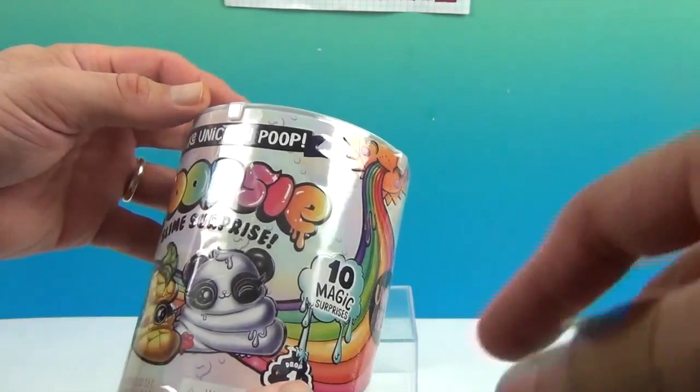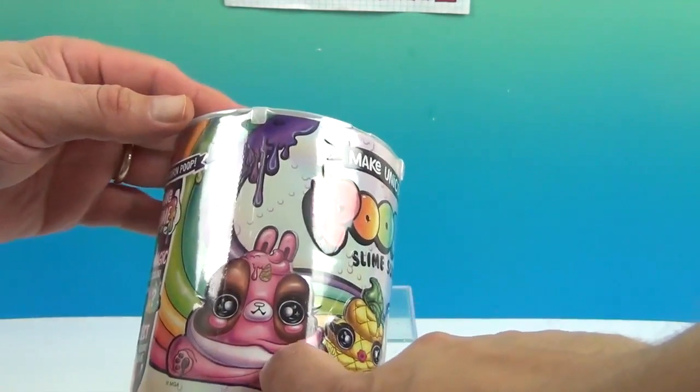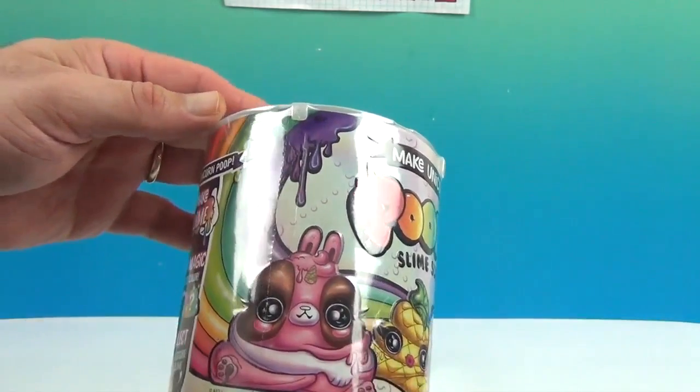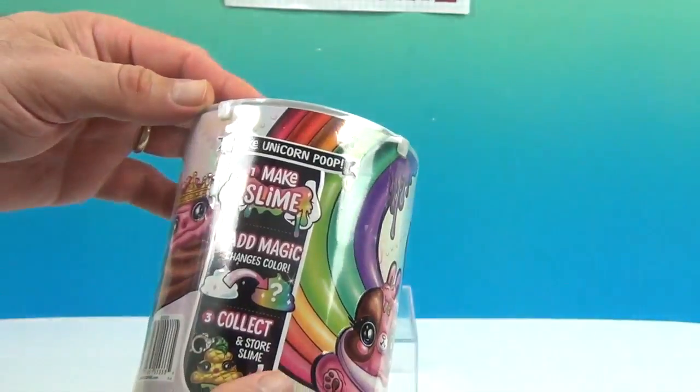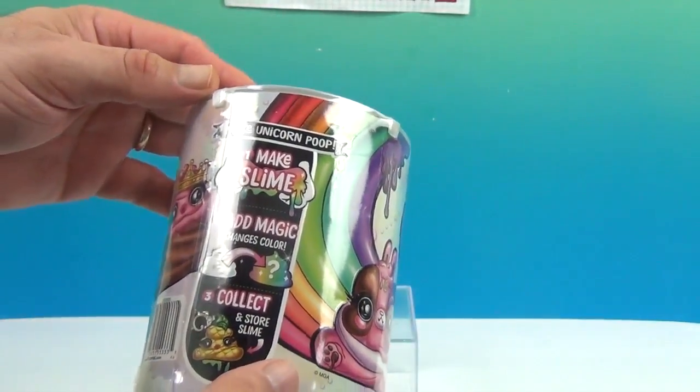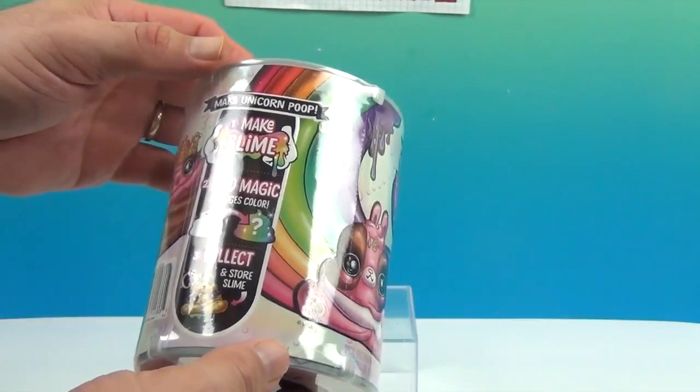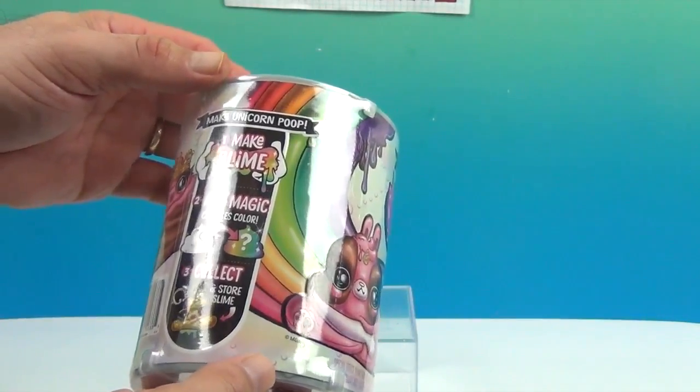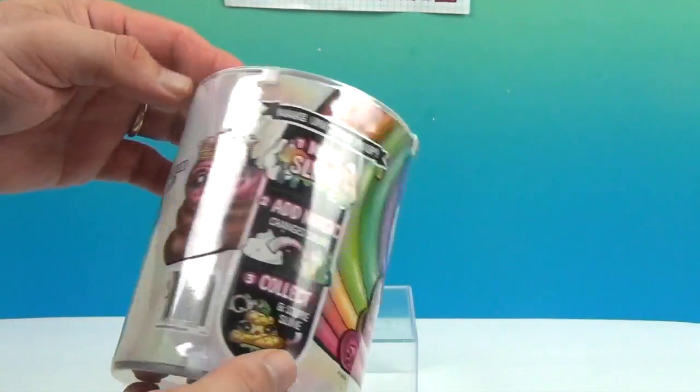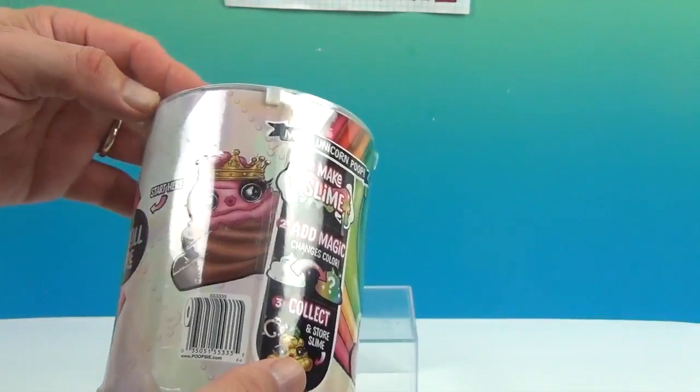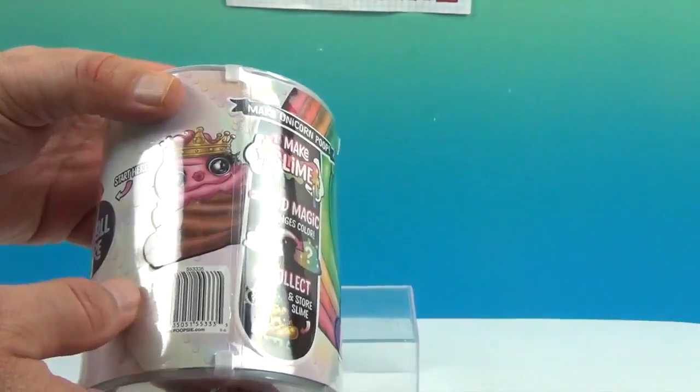And so it looks like they got one that looks like a panda, one that looks like a pineapple, and one that looks like a Neapolitan bunny or something. Yeah, I don't even know. Like a peep going wrong or something. And it says, number one, make the slime. Number two, add the magic. It changes colors. Maybe there's a color change one. And collect and store your slime. Looks like in the little containers. So that is super cool.